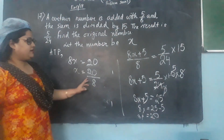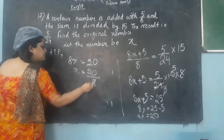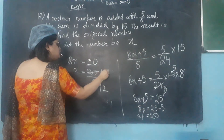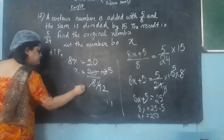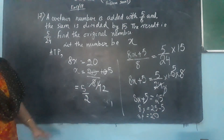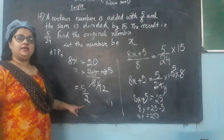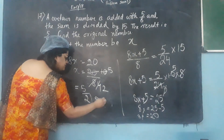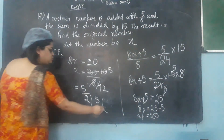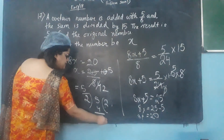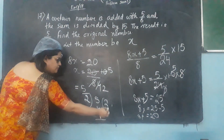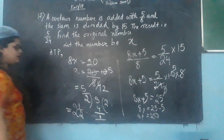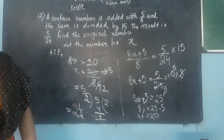So 20 is already there; divide it by 8. 2 × 4 = 8 and 2 × 10 = 20, simplifying further: 2 × 2 = 4 and 2 × 5 = 10. So x = 5/2. When the numerator is greater than the denominator — an improper fraction — convert to a mixed fraction. Dividing 5 by 2: 2 × 2 = 4, remainder 1. So the mixed fraction is 2 and 1/2. The unknown number is 2½.